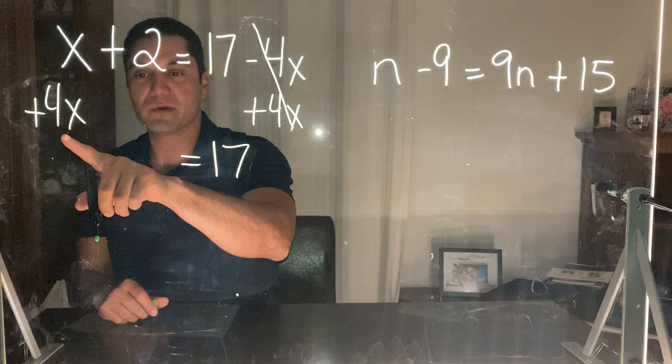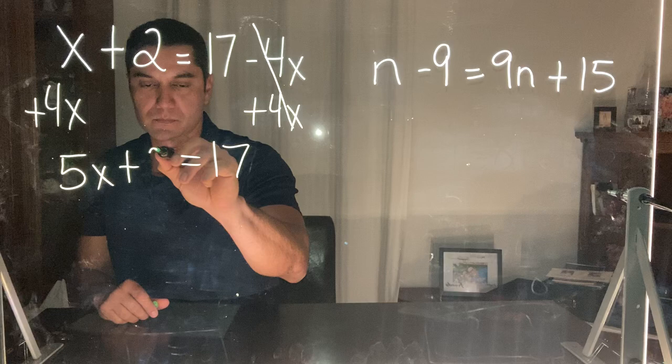Over here if I have an x and I add 4x's, that's going to give me 5x's. I bring down my plus 2. Now I'm down to a two-step equation.